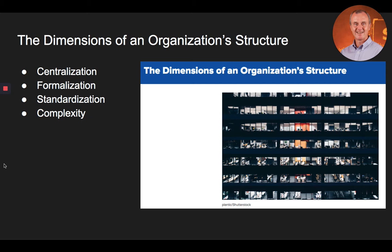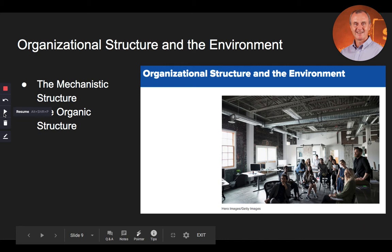In summary on the dimensions of an organization's structure, the four dimensions organizations use to evaluate the effectiveness of their structure are centralization, formalization, standardization, and complexity. Centralization describes where the decision-making authority rests within the organization. Formalization is the degree to which written rules and regulations are utilized to guide employee actions. Standardization refers to the degree of routine and predictable actions that result from formalization. And finally, complexity describes the number of different positions and departments, as well as the number of authority levels within an organization.